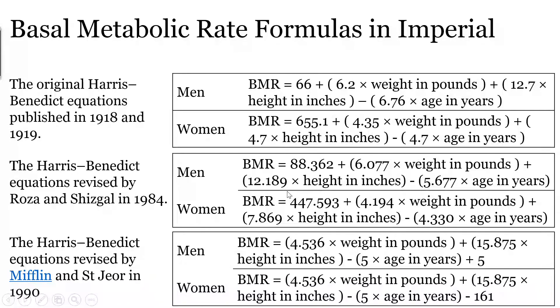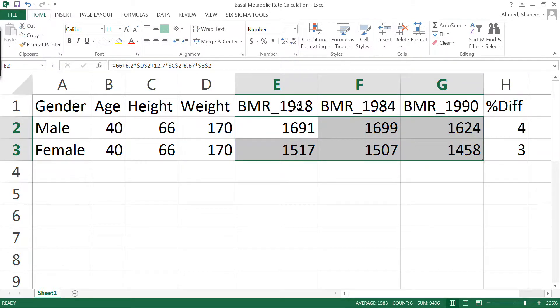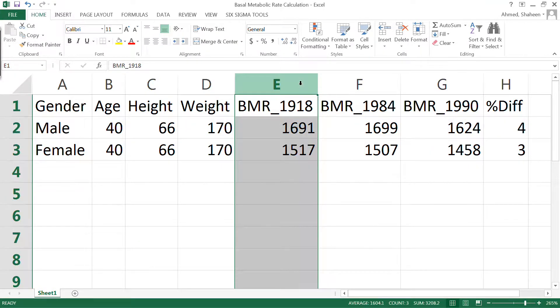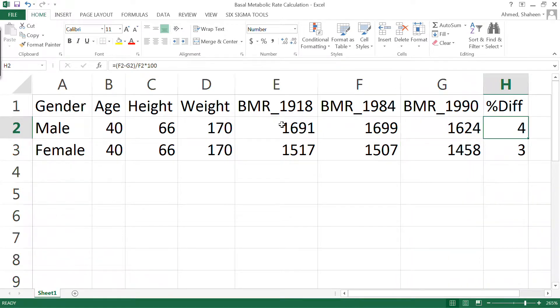I have calculated this for a 40-year-old person, height 5 feet 6 inches, and weighs 170 pounds. This is the basal metabolic rate calculated based on the formula developed by Harris in 1918, and then 1984, and then in 1990 by another person. They're all kind of revised formulas.